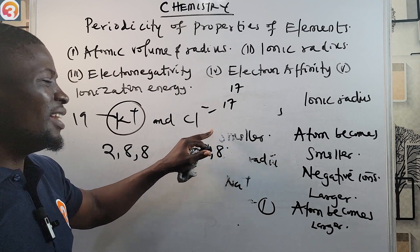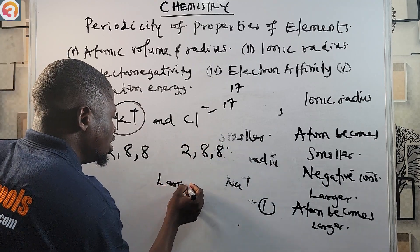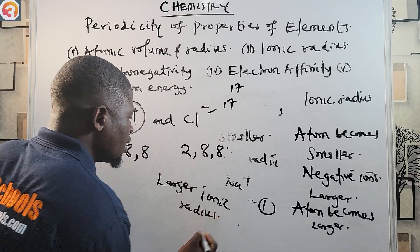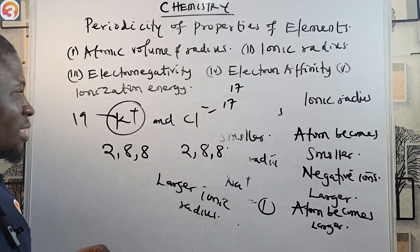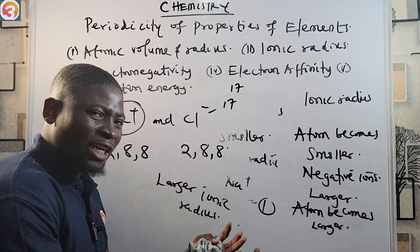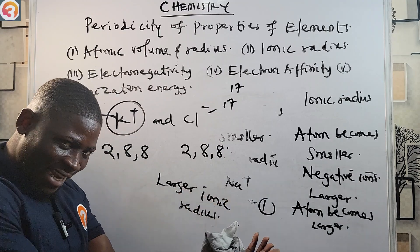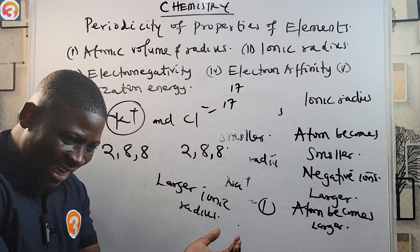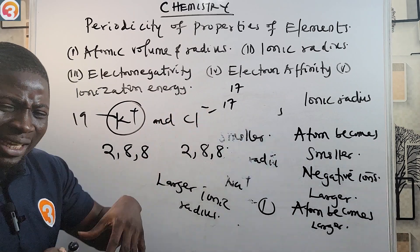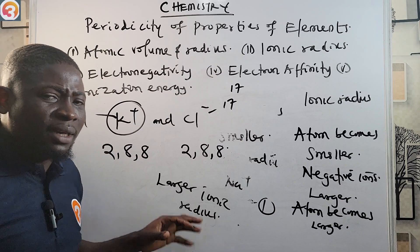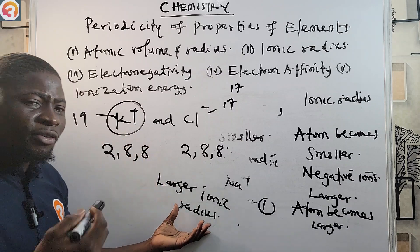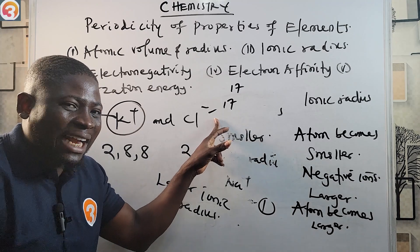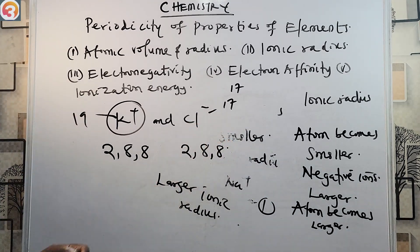Since K⁺ and Cl⁻ have the same number of electrons, the ion with the lesser atomic number will have the larger ionic radius. Chlorine has atomic number 17 and potassium has atomic number 19 — so Cl⁻, having the lesser atomic number, will have the larger ionic radius.